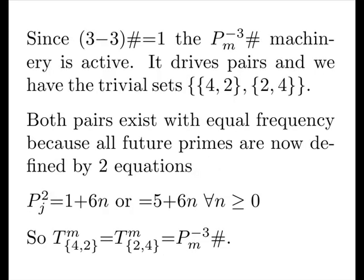Since three minus three primordial equals one, the third minor primordial machinery is now active. It drives pairs and we have the trivial sets four two and two four. Both pairs exist with equal frequency because all future primes are now defined by two equations. Note the superscript here is M equals two, not the square.